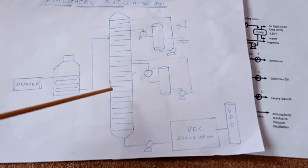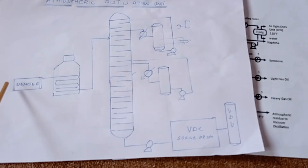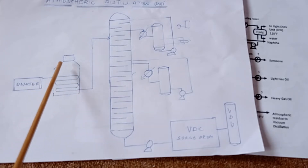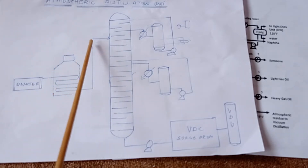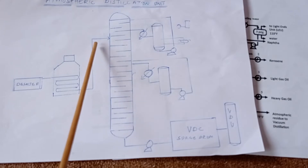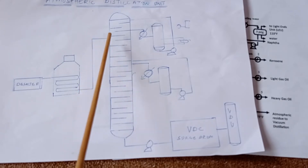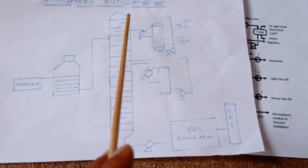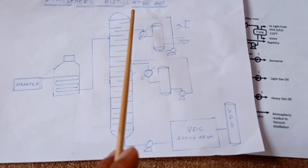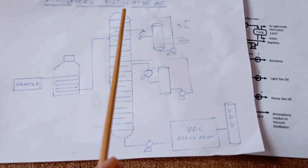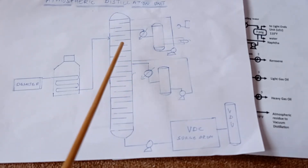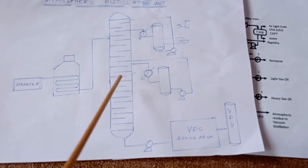In this process, preheated crude is heated to 250–260°C and is further heated in a furnace up to a temperature of 350°C. This heated crude oil is then passed into a distillation column in which the top pressure is maintained at around 1.2 to 1.5 atmosphere — nearly 1 atmosphere pressure.